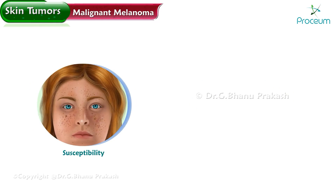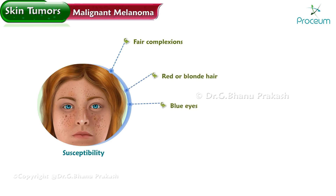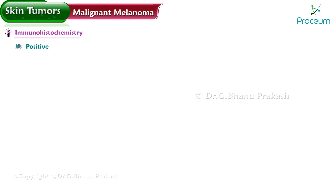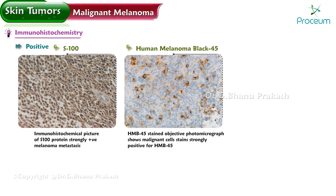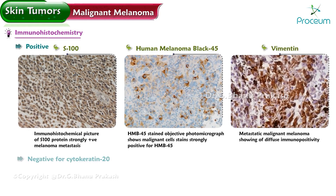Individuals most susceptible to malignant melanoma typically have fair complexions, red or blonde hair, blue eyes, freckles, and a tendency to tan poorly while sunburning easily. Immunohistochemically, malignant melanoma is positive for S100, human melanoma black 45 (HMB-45), and vimentin, but negative for cytokeratin 20.